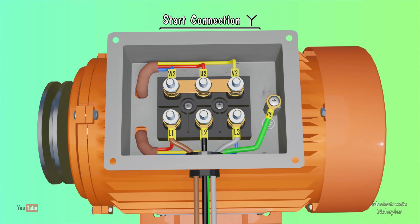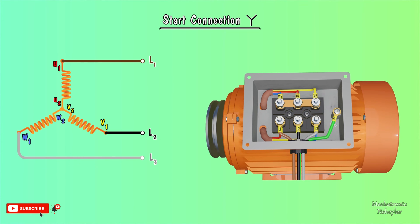Then, in this way, the star connection would be made in the terminal box of the six-terminal three-phase motor. On the left side is shown the configuration that the coils should be.